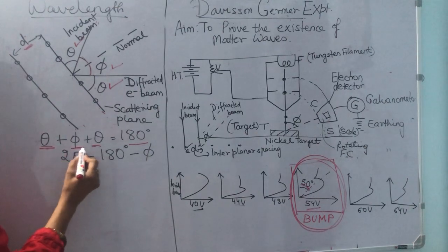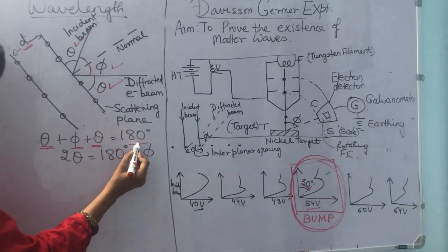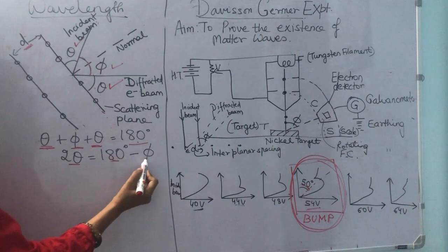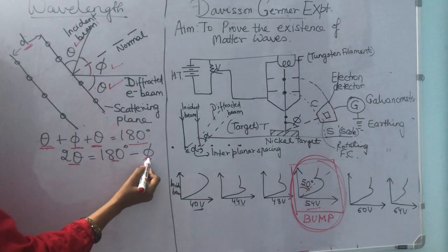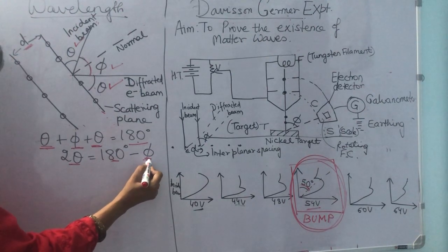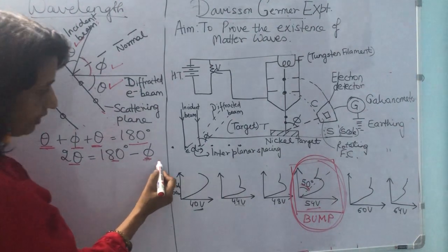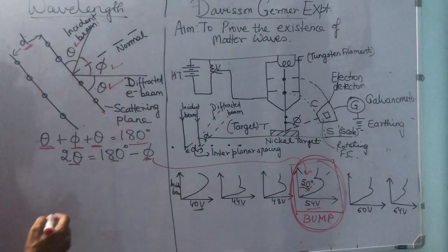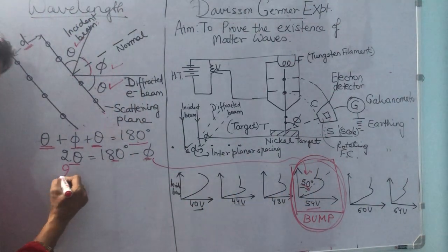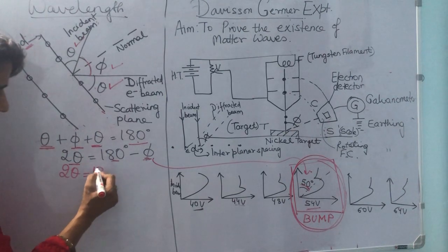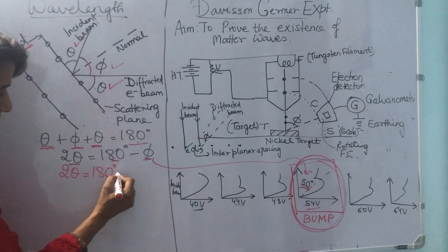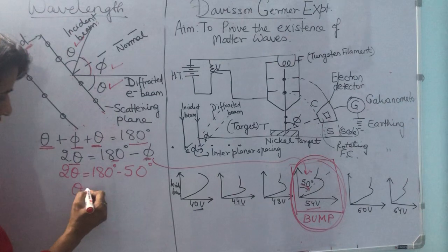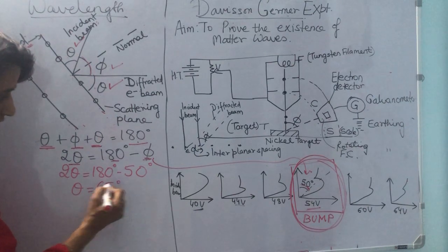We have: θ + φ + θ = 180 degrees, so 2θ = 180° − φ. Taking φ as 50 degrees, 2θ = 180° − 50° = 130°, so θ = 65 degrees.